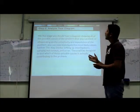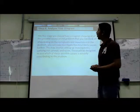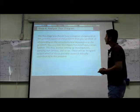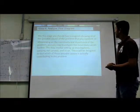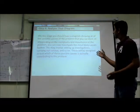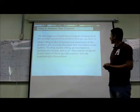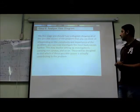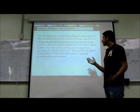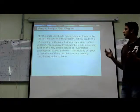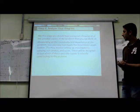Step 4: Analyze your diagram. By this stage, you should have a diagram showing all of the possible causes of the problem that you can think of. Depending on the complexity and importance of the problem, you can now investigate the most likely causes further. This may involve setting up investigations, carrying out surveys, and so on. This will be designed to test which of these possible causes is actually contributing to the problem.